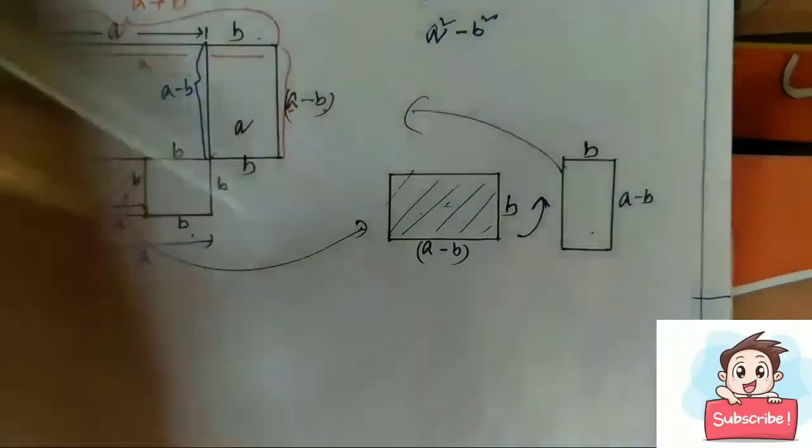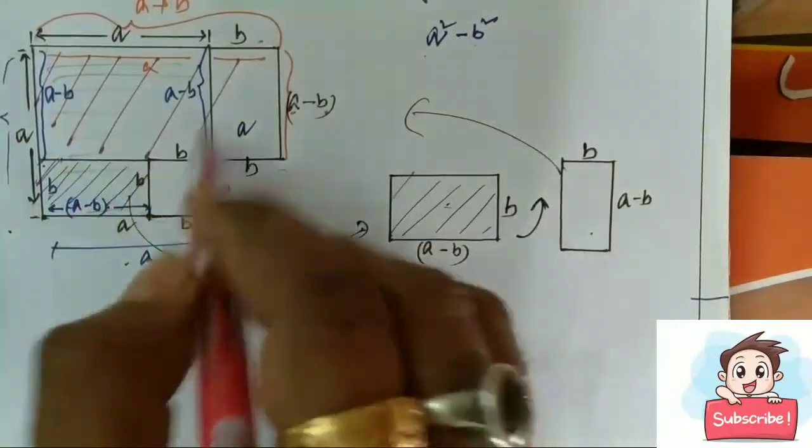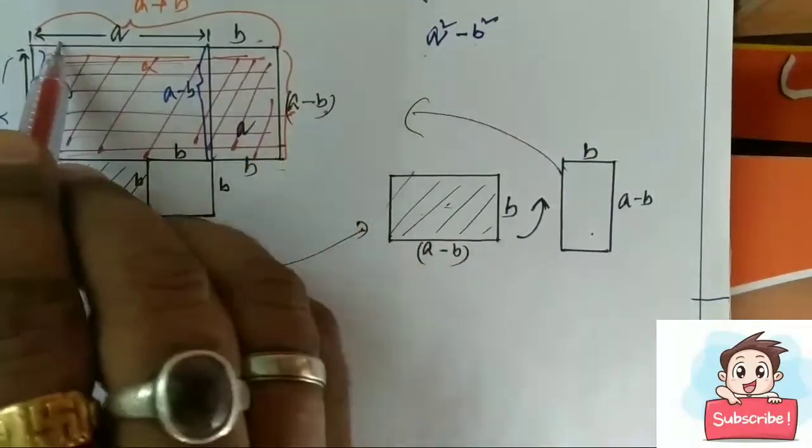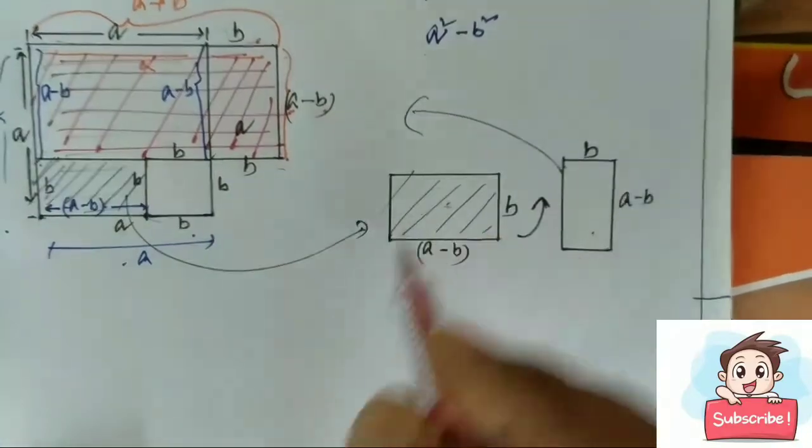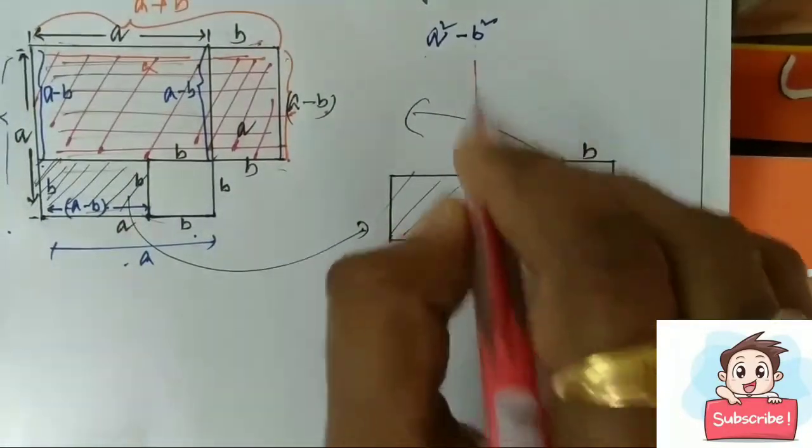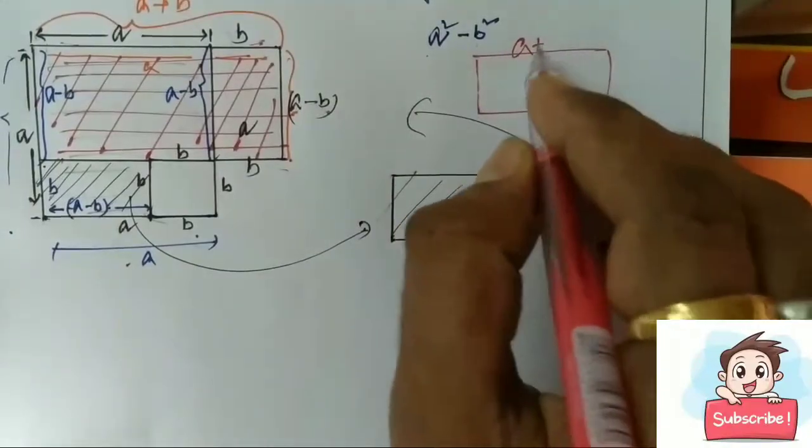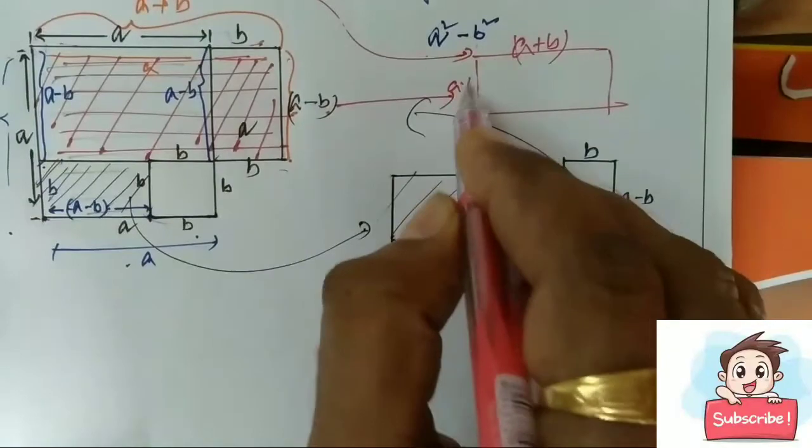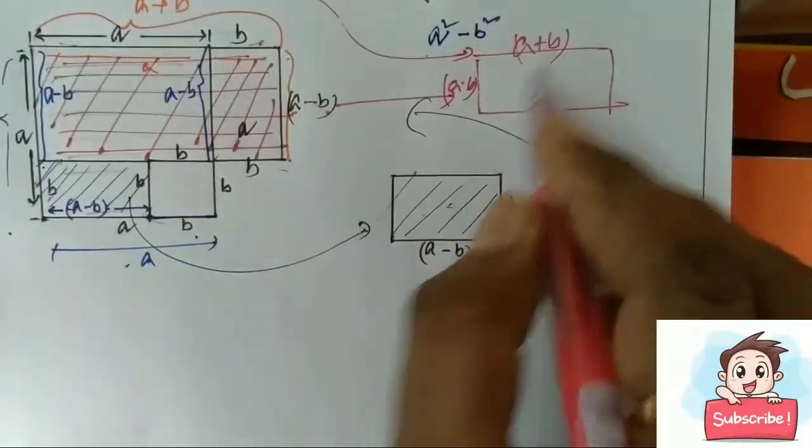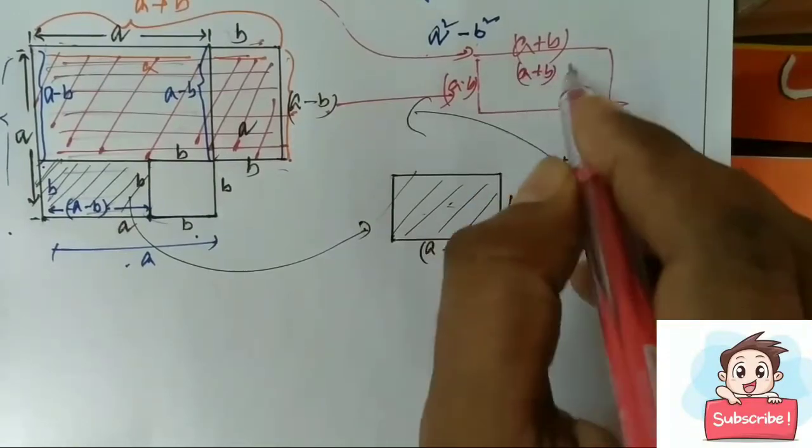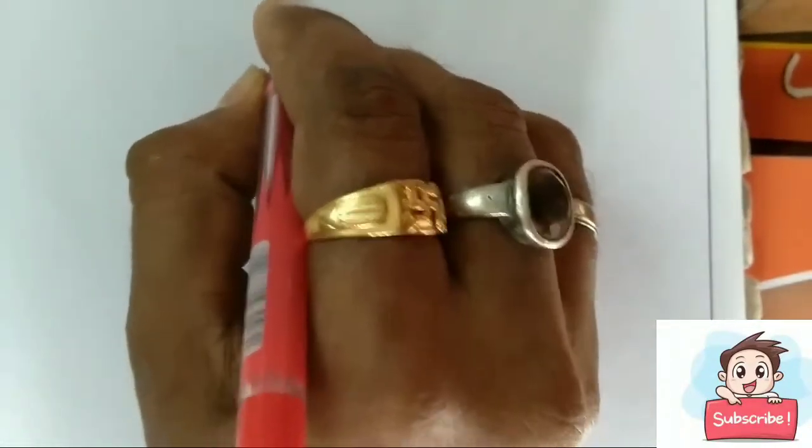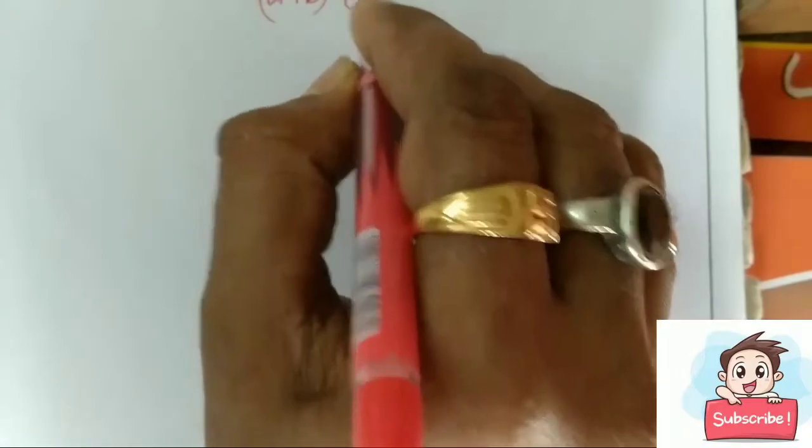So length is a plus b and breadth is a minus b. Then what is the area of this diagram? A plus b multiply a minus b. We draw here a plus b and a minus b. What is the area of this rectangle? Area is length into breadth, a plus b into a minus b.